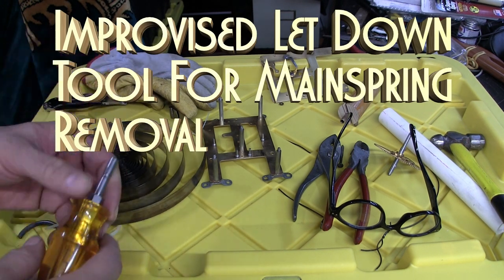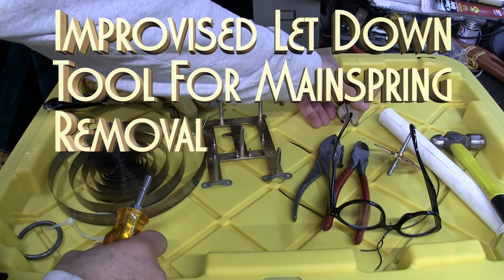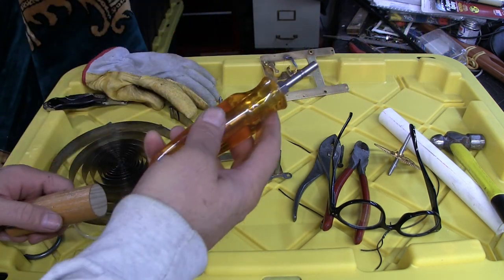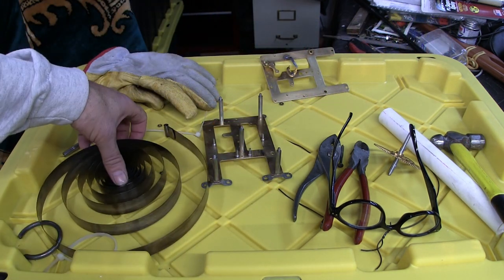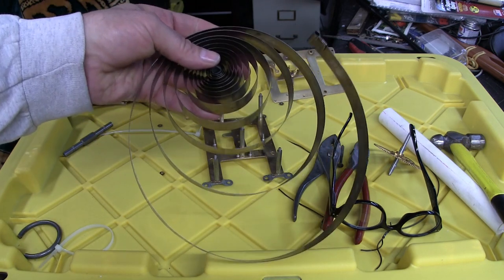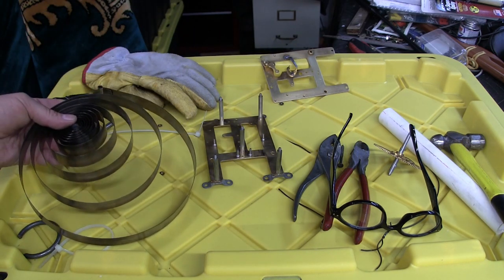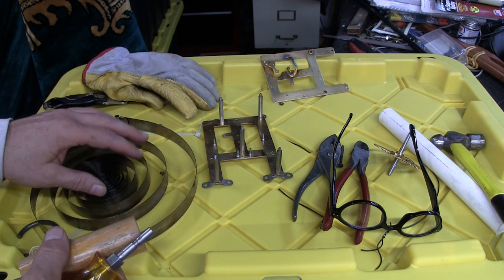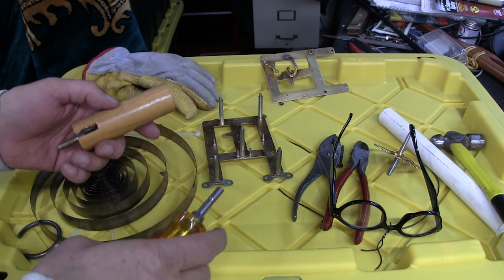All right, I just want to make a quick video on a letdown tool because in the last video I showed cleaning the mainspring. But sometimes to take the mainspring out, you need to wind it up or let it down, and the letdown tool is perfect for that.